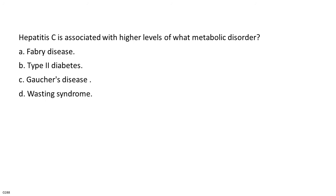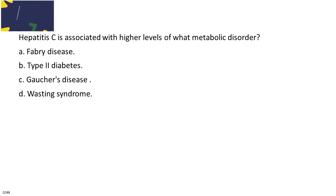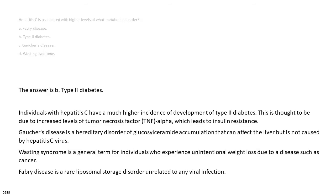Hepatitis C is associated with higher levels of what metabolic disorder? A. Fabry disease. B. Type 2 diabetes. C. Gaucher's disease. D. Wasting syndrome. The answer is B. Type 2 diabetes. Individuals with hepatitis C have a much higher incidence of development of type 2 diabetes. This is thought to be due to increased levels of tumor necrosis factor TNF-alpha, which leads to insulin resistance. Gaucher's disease is a hereditary disorder of glucosylceramide accumulation that can affect the liver but is not caused by hepatitis C. Wasting syndrome is a general term for unintentional weight loss due to disease. Fabry disease is a rare lysosomal storage disorder unrelated to any viral infection.